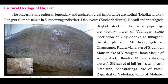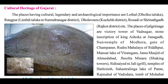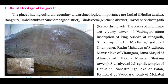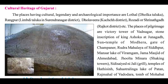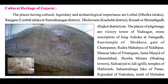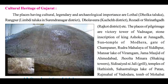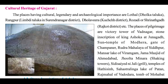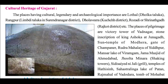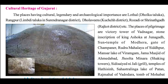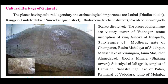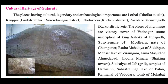Now we will study cultural heritage of Gujarat. The places having cultural, legendary, and archaeological importance are Lothal in Dholka Taluka, Rangapur in Limbdi Taluka of Surendranagar district, Dholavira in Kachh district, Rojdi or Srinathgarh in Rajkot district, etc. The places of pilgrimage include the Victory Tower of Vadnagar and sites in Kachh district.